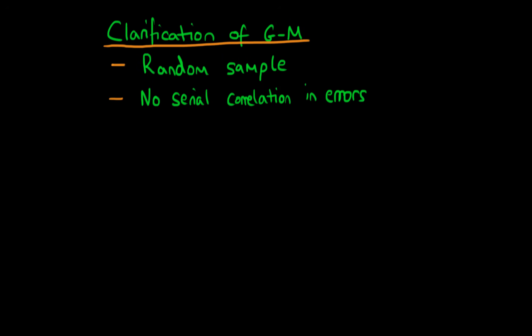In this video I want to provide some clarification on two of the Gauss-Markov assumptions as I've stated them. The two Gauss-Markov assumptions we're going to talk about here are that of having a random sample and the second one is having no serial correlation amongst the error term.